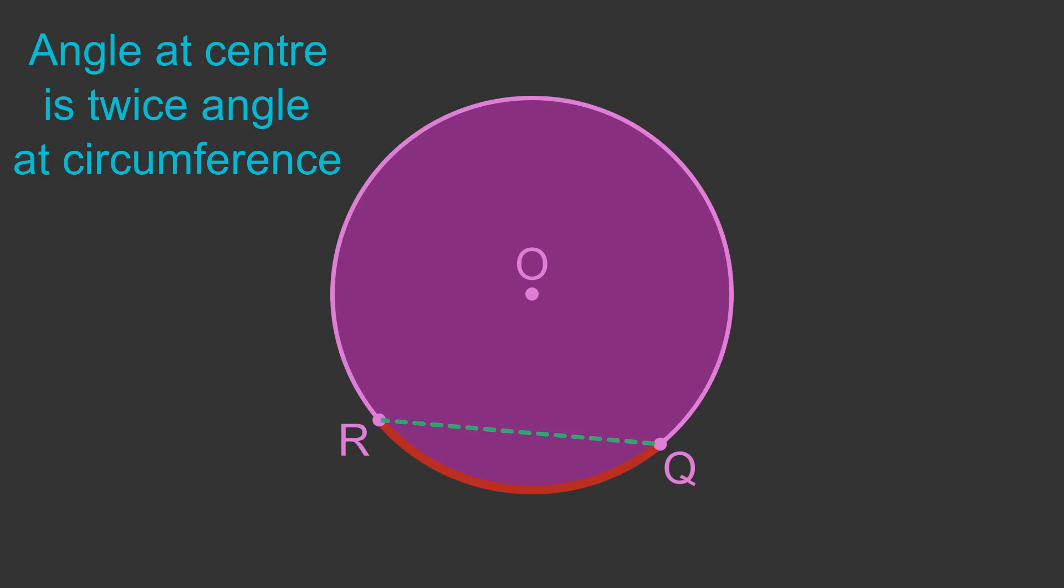The chord is also shown as a dashed line. We can draw lines from R and Q to the centre and they form an angle B. We can also draw lines from points R and Q to some point P on the circumference and they form an angle A. The angle B will always be twice the angle A.